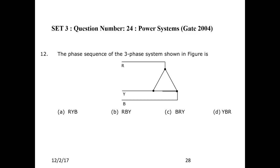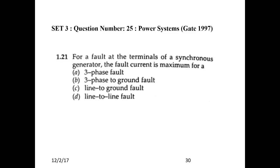Next question: The phase sequence of the three-phase system — from the given diagram, it is R, B, Y. Next question: For a fault at the terminals of a synchronous generator, the maximum fault current occurs for which fault? In a three-phase symmetrical fault, only a positive sequence component is present. For a line-to-ground fault, which is a severe fault, all three sequence components — positive, negative, and zero sequence — are present. The answer is line-to-ground fault, choice C.